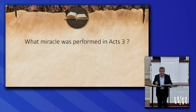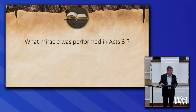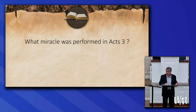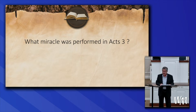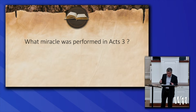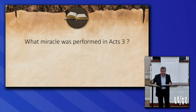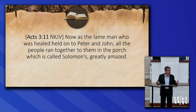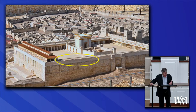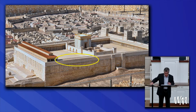What miracle was performed in Acts chapter 3? The memory tool 'crippled cured' gives you a clue. Richard, what happened? A lame man was healed — lame since birth. After the miracle, we read in Acts 3:11 that the lame man who was healed held on to Peter and John, and all the people ran together to them in Solomon's portico, greatly amazed.